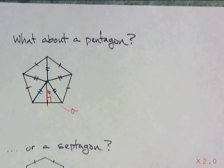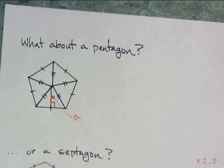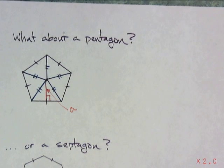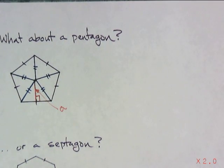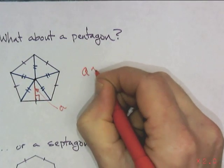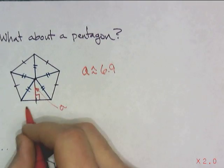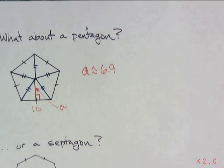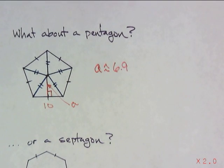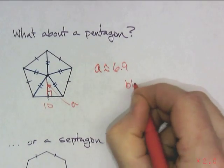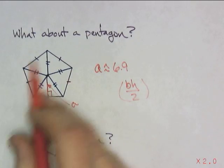So, if I have a pentagon here, and the apothem, we are going to say the apothem is approximately 6.9, and I'm going to tell you that the side length here is 10. At this point, it becomes very simplistic. Base times height divided by 2, and there are going to be 5 triangles.